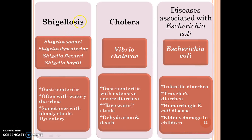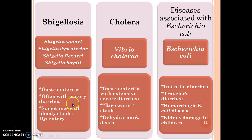Shigellosis is caused by Shigella sonnei, Shigella dysenteriae, Shigella flexneri, and Shigella boydii. The symptoms are gastroenteritis often with watery diarrhea, sometimes with bloody stools, and dysentery.